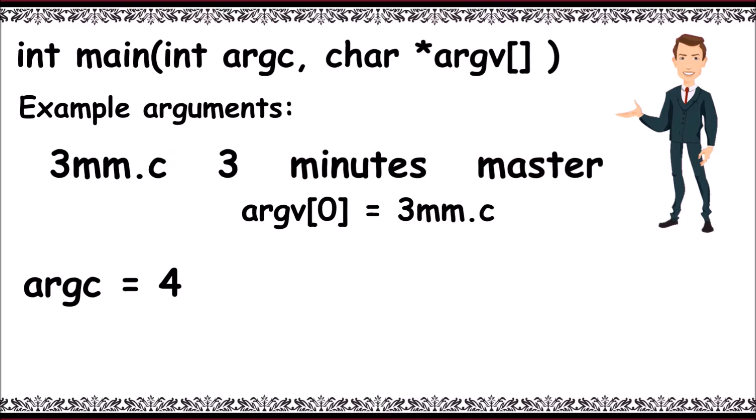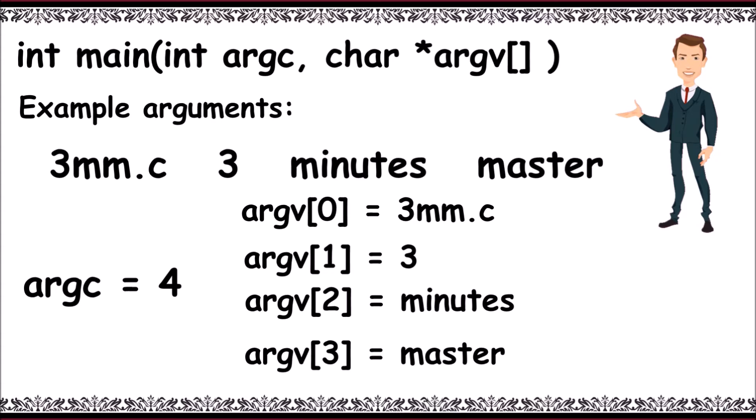And next, first argument is argv of 0 is equal to 3mm.c. And next argv of 1 is equal to 3, and then argv of 2 is equal to minutes, and then argv of 3 is equal to master.